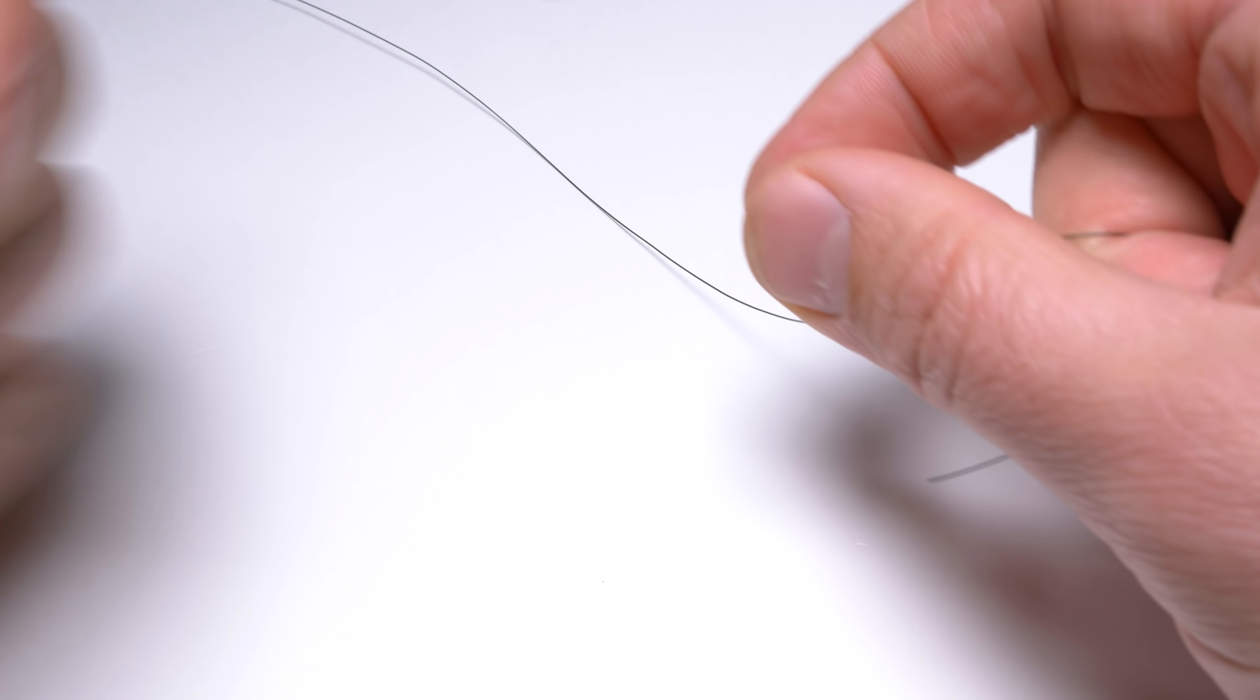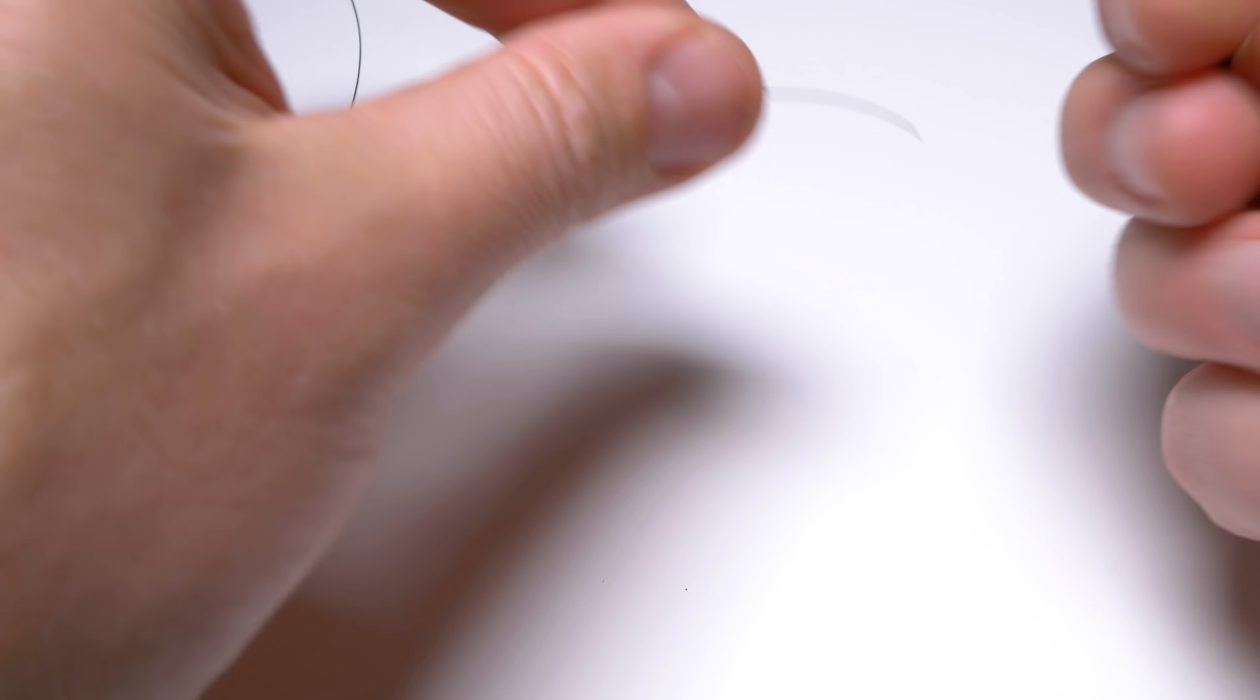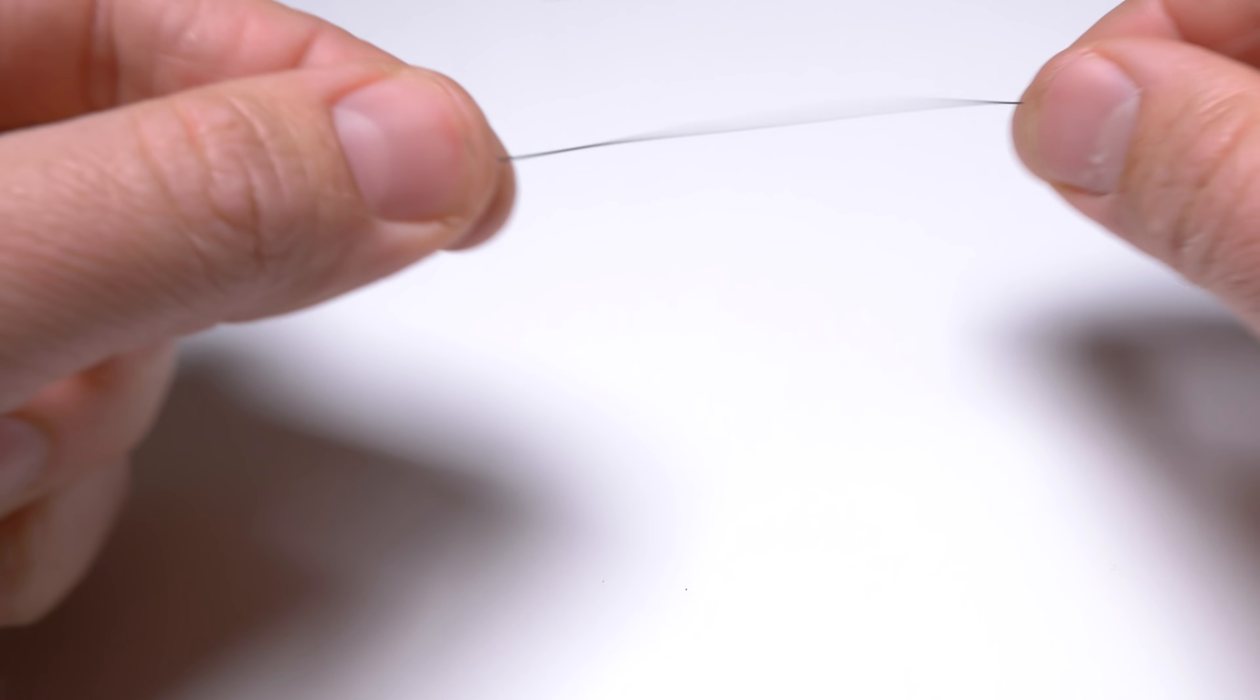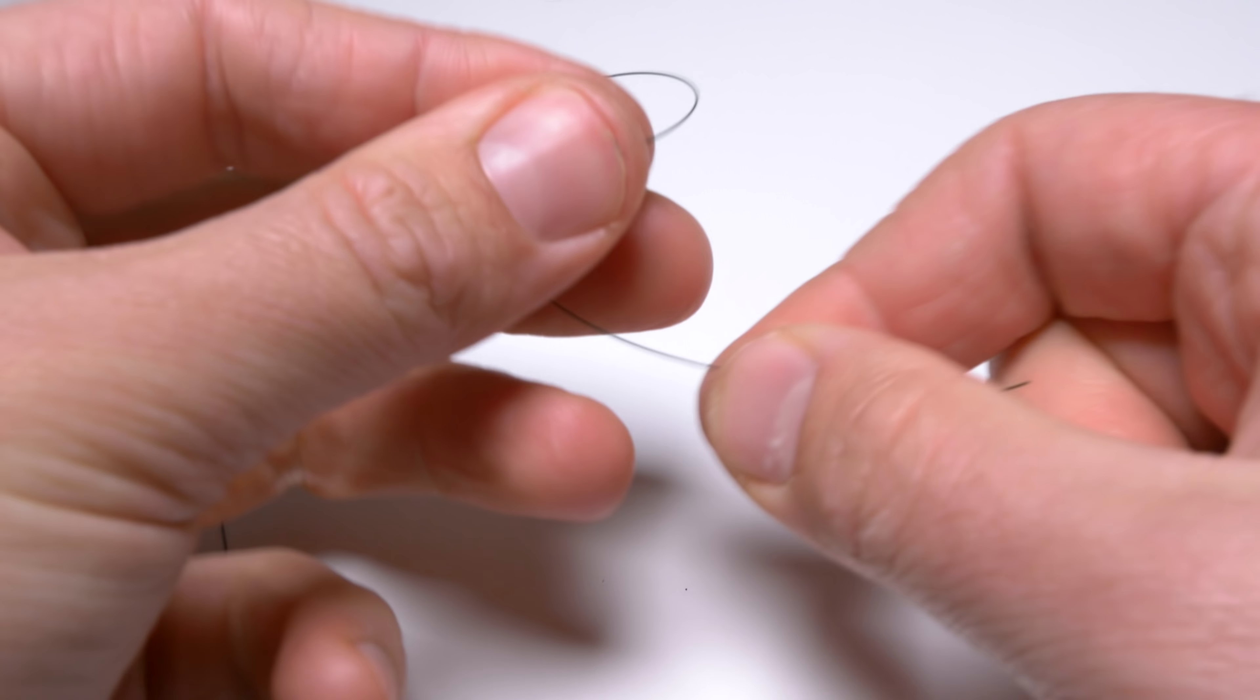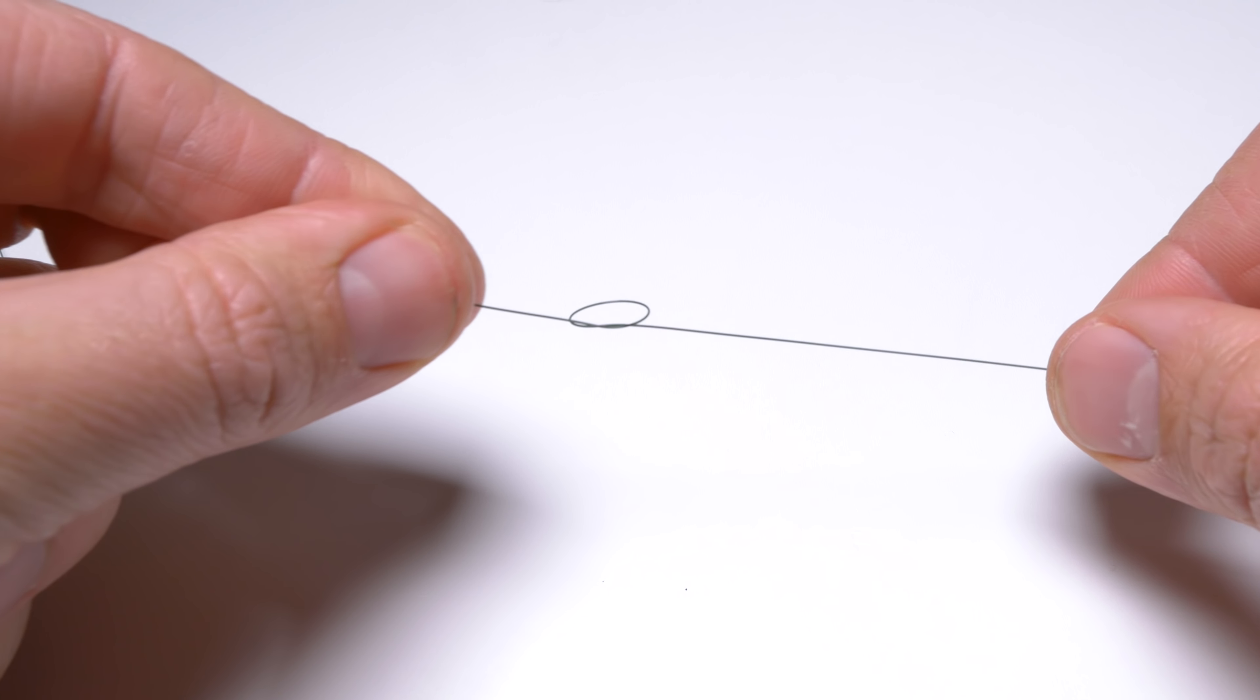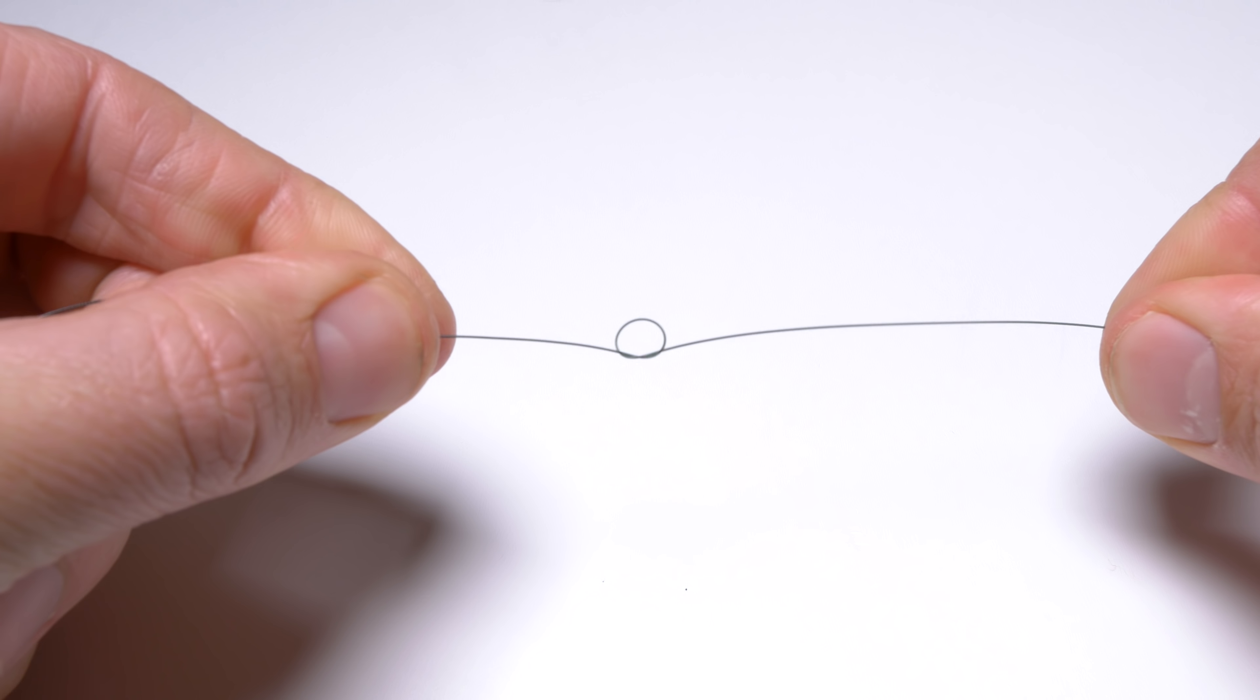Let's grab our hook. And before threading the hook onto the line, we want to form a small sergeant's knot. Like that, but we don't want to pull it tight as yet.